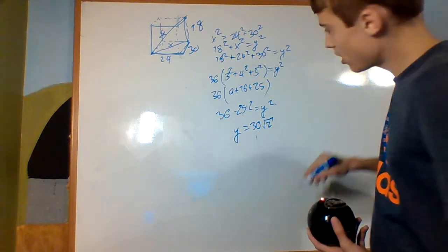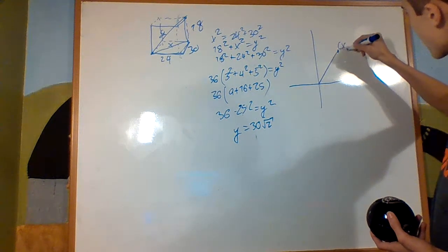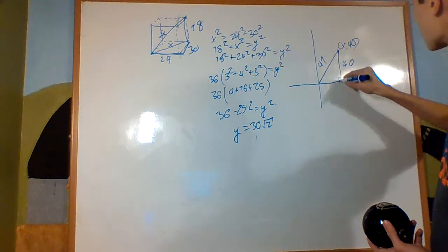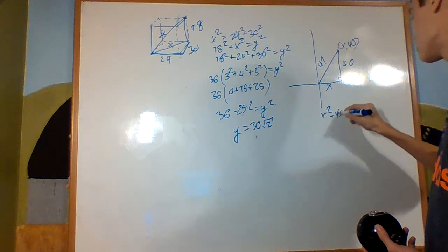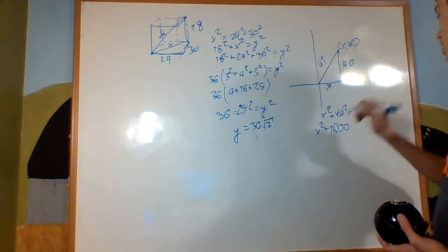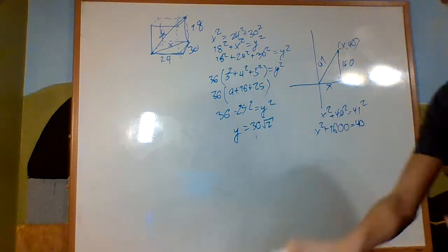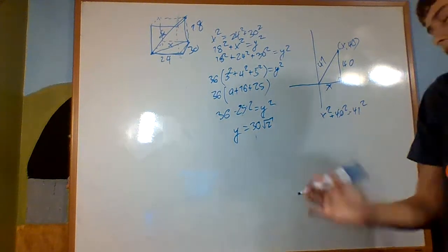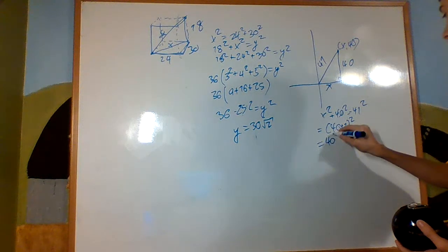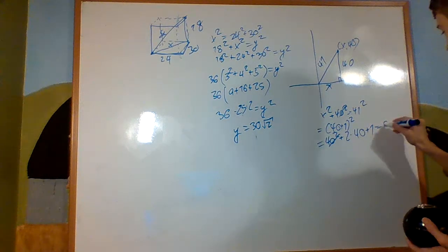Problem 276: on the coordinate plane we have a point (X, 40) and the distance from the origin is 41. Drawing the right triangle: X squared plus 40 squared equals 41 squared. Instead of computing both squares separately, I expand 41 squared as (40+1) squared, which is 40 squared plus 80 plus 1. The 40 squared terms cancel, leaving X squared equals 81, so X equals 9.